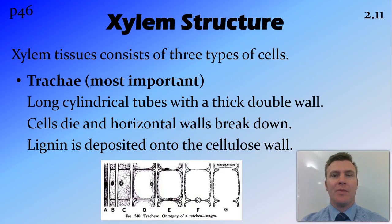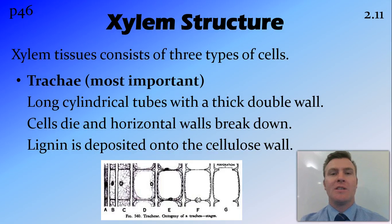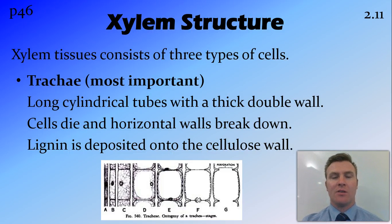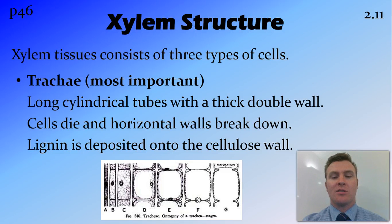So we'll look at xylem in a bit more detail. There are three types of cells that make up the xylem tissue. The most important one is the trachea. The trachea are long cylindrical tubes and these carry the most amount of water. They have a thick double wall strengthened by rings of a polysaccharide called lignin. The cells that were once there actually die, and as we can see in this diagram, the cell grows to its full size, then dies and the inside starts to disappear. We get perforations on the horizontal walls, eventually the walls break down and we end up with things that look like straws. They also develop pits on the outside of the wall to allow water to come into or out of the xylem.